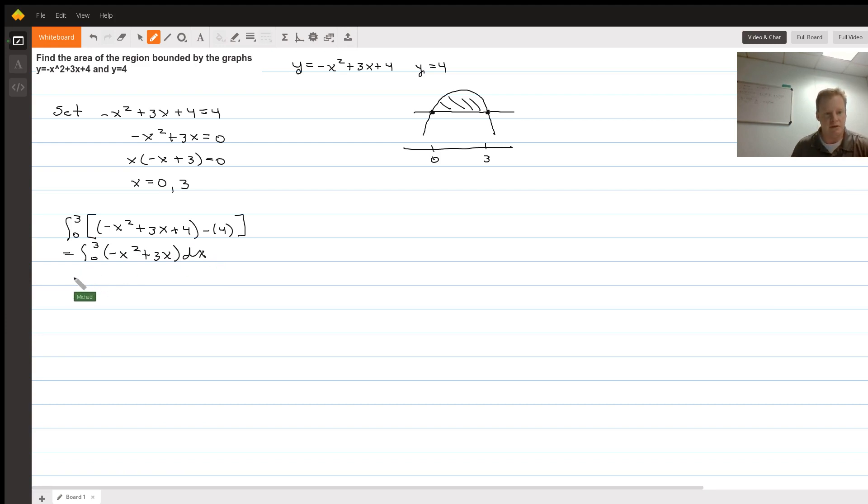Now I need the antiderivative which is going to be negative x cubed over 3 plus 3x squared over 2.